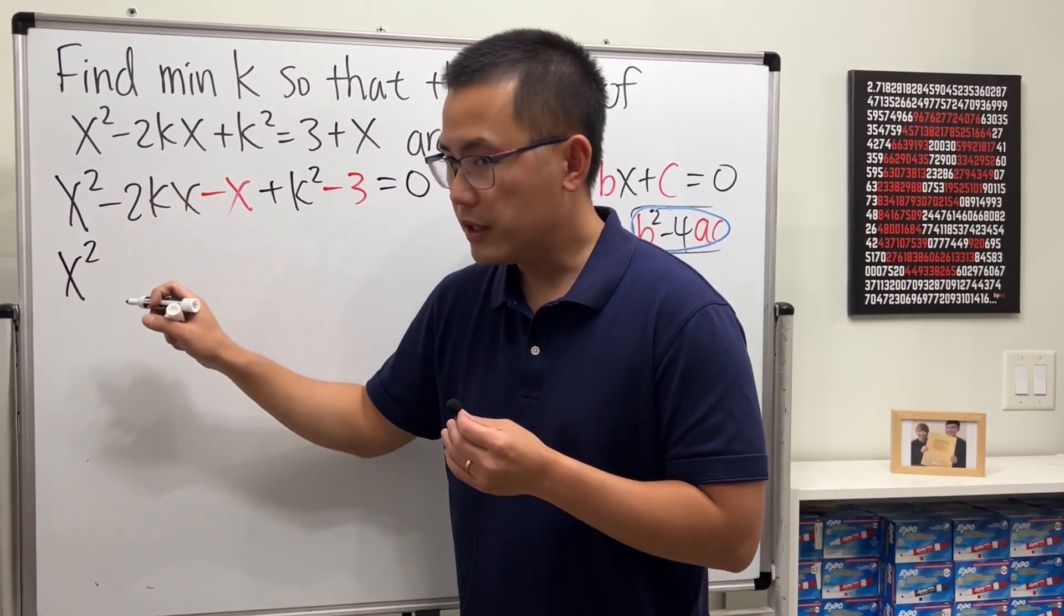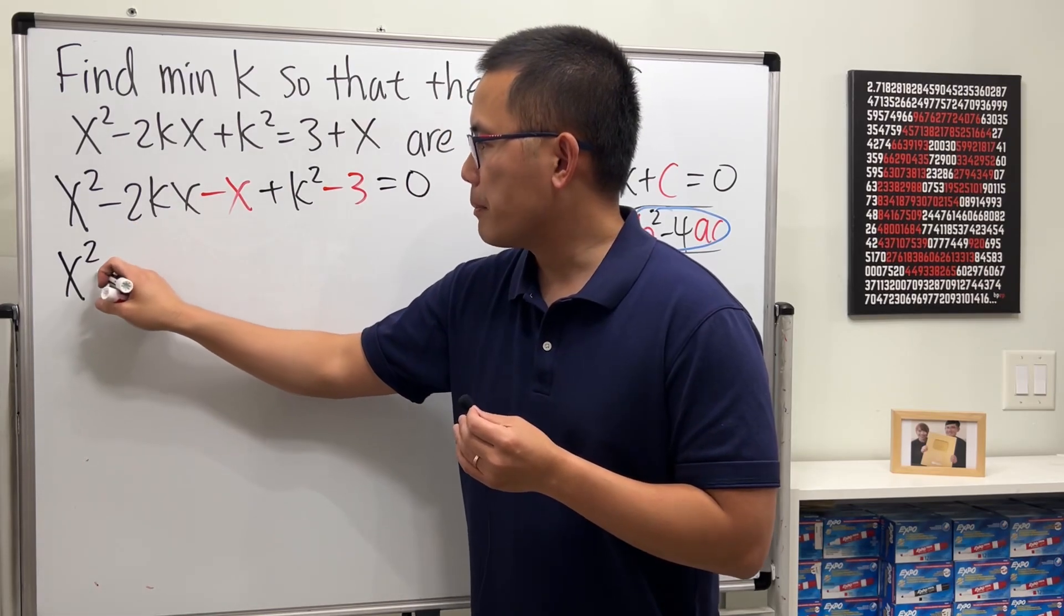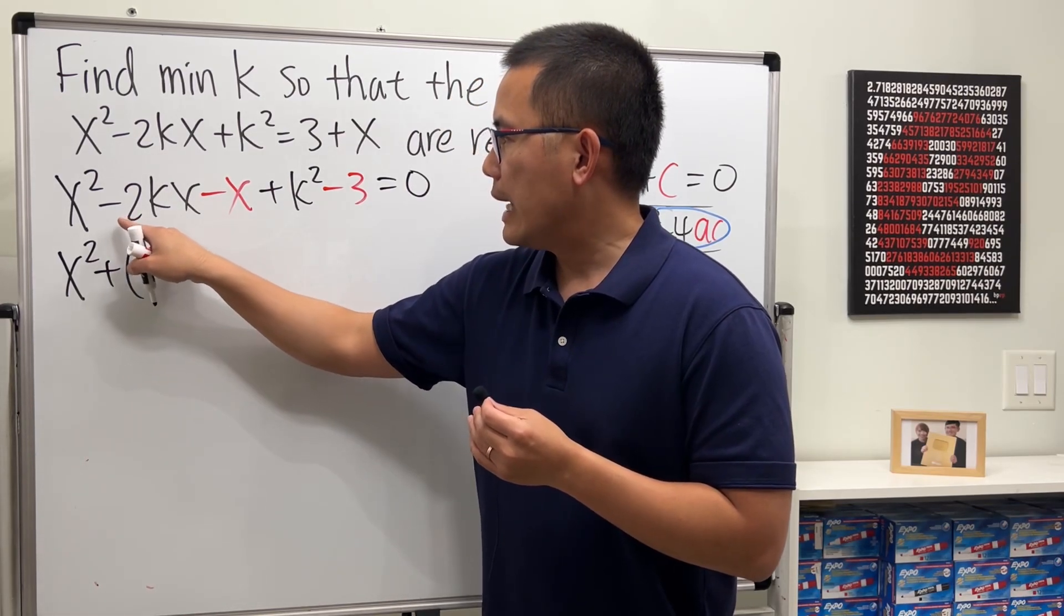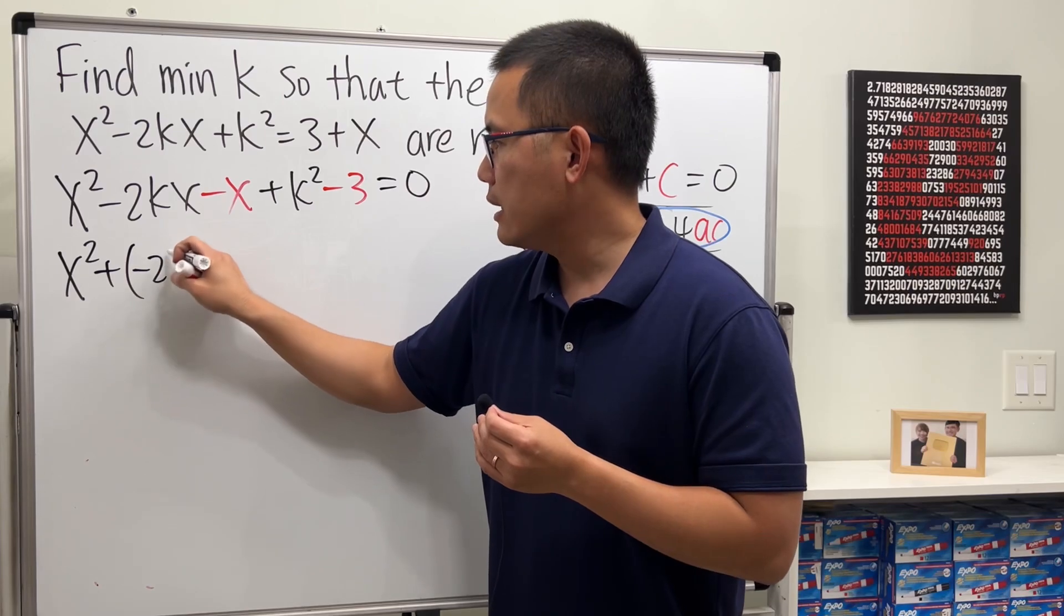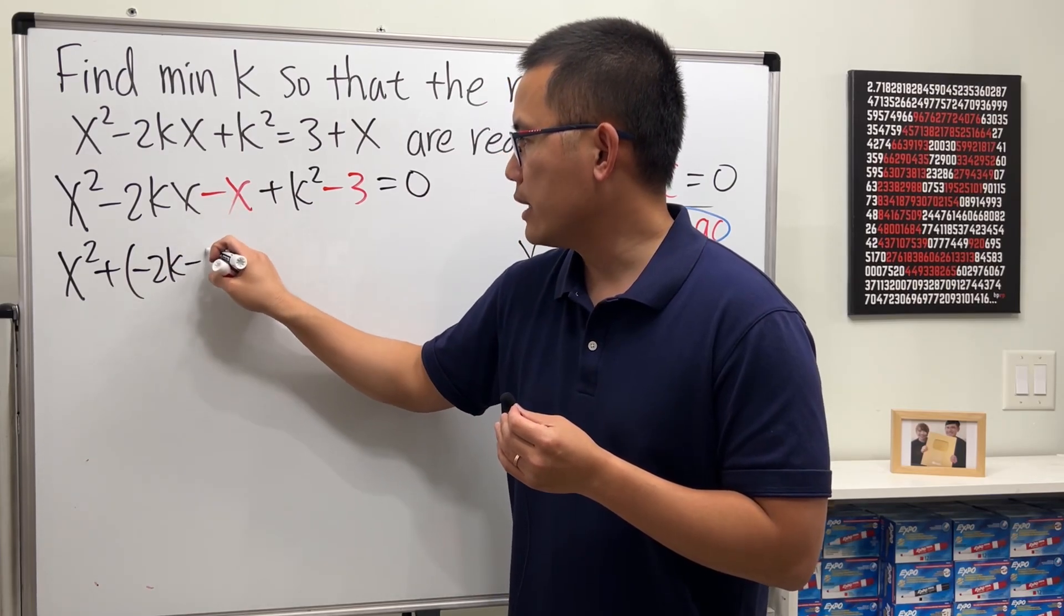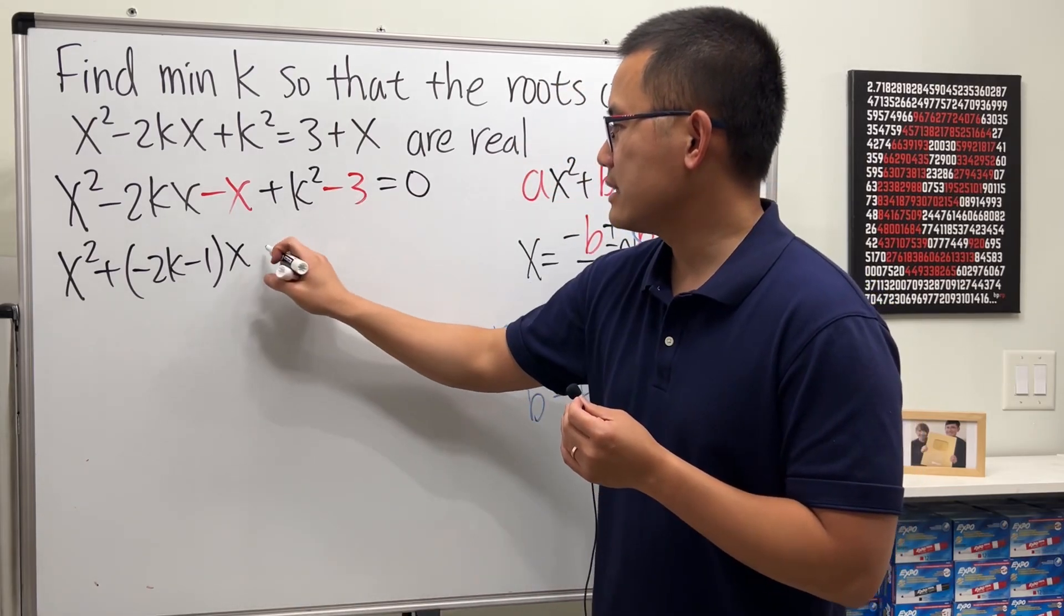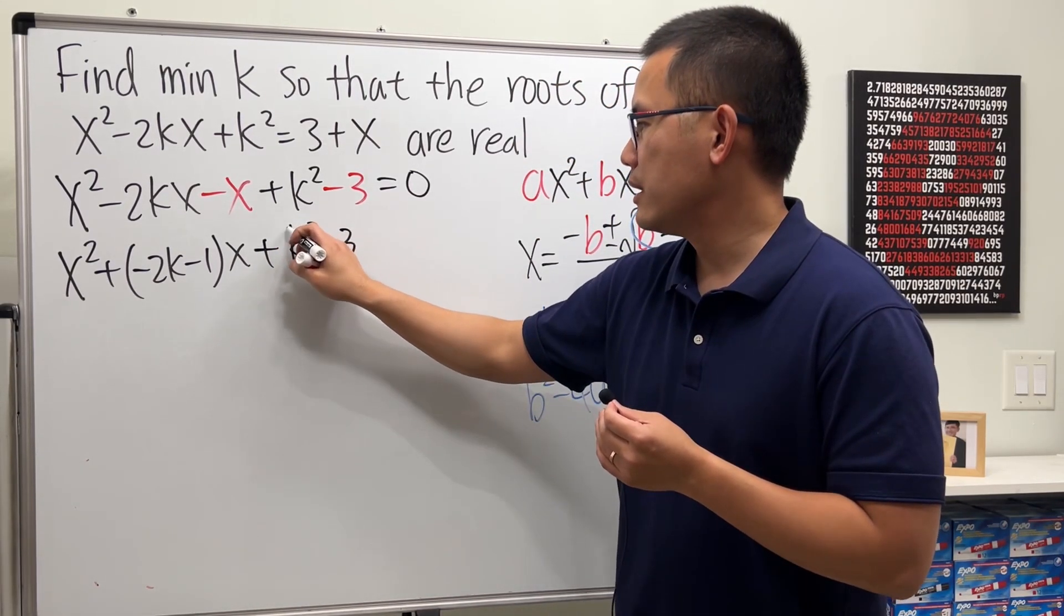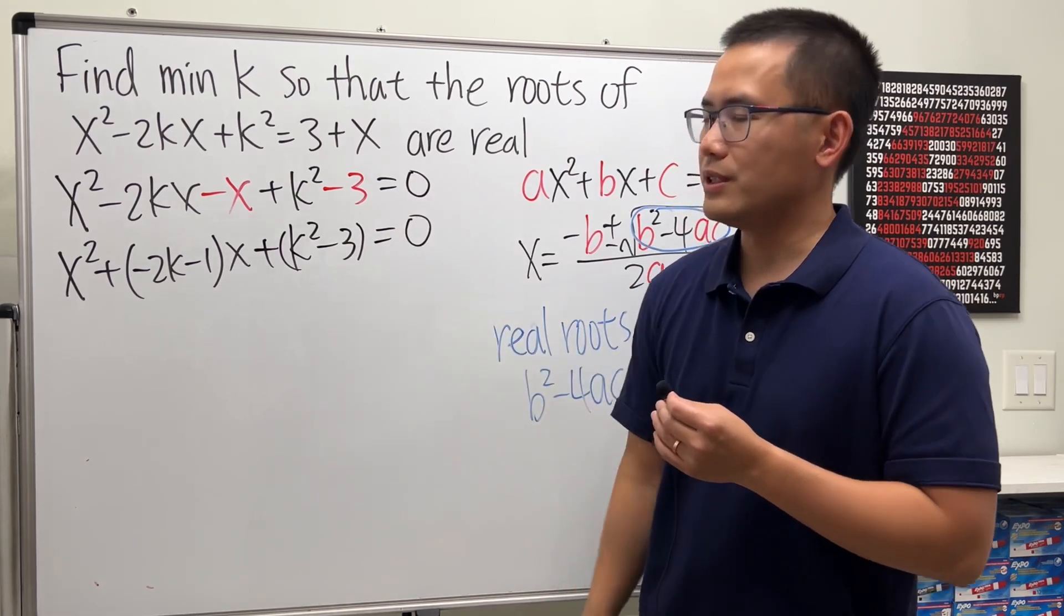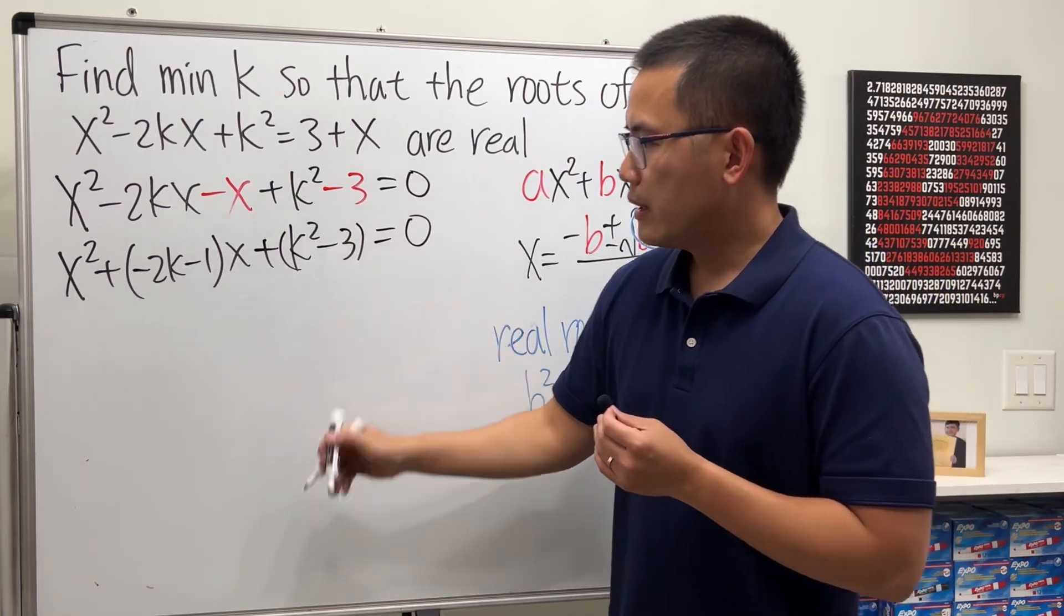Now we can factor out the x right here. This is x² plus, I'm going to put down negative 2k and this is minus 1, and then put the x like this. And then lastly we have the k² - 3, and that's equal to zero. So have a look.